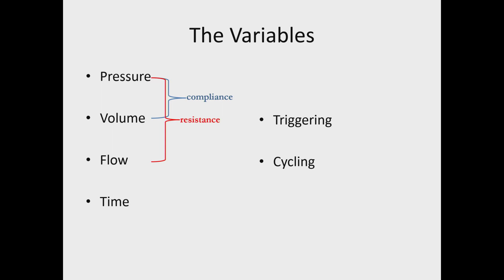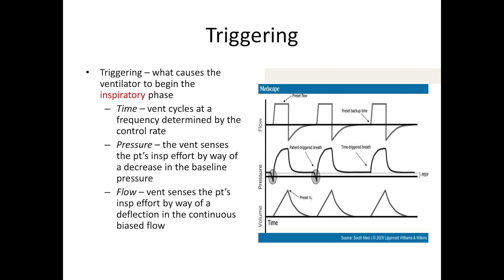We also have some control over triggering and cycling. Triggering is what really begins the inspiratory cycle — it's what tells the mechanical ventilator that it's time to begin the inspiratory phase of respiration.